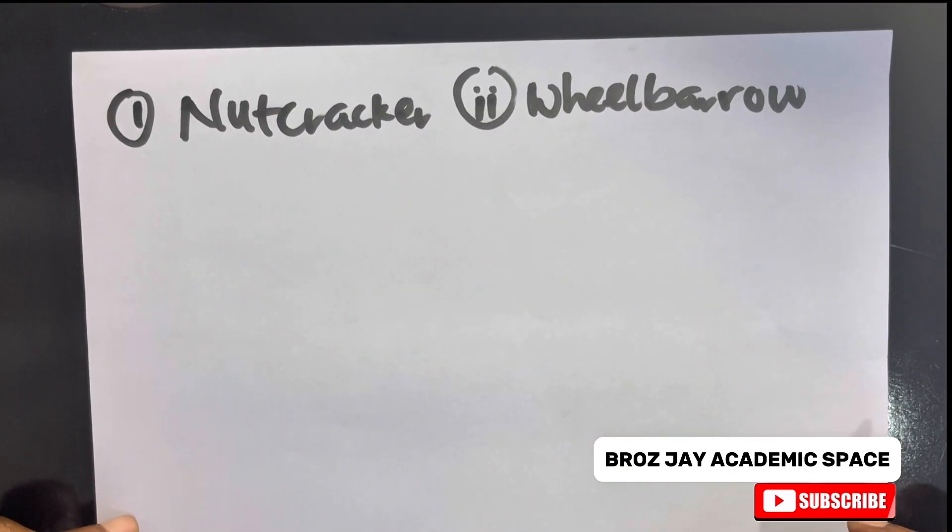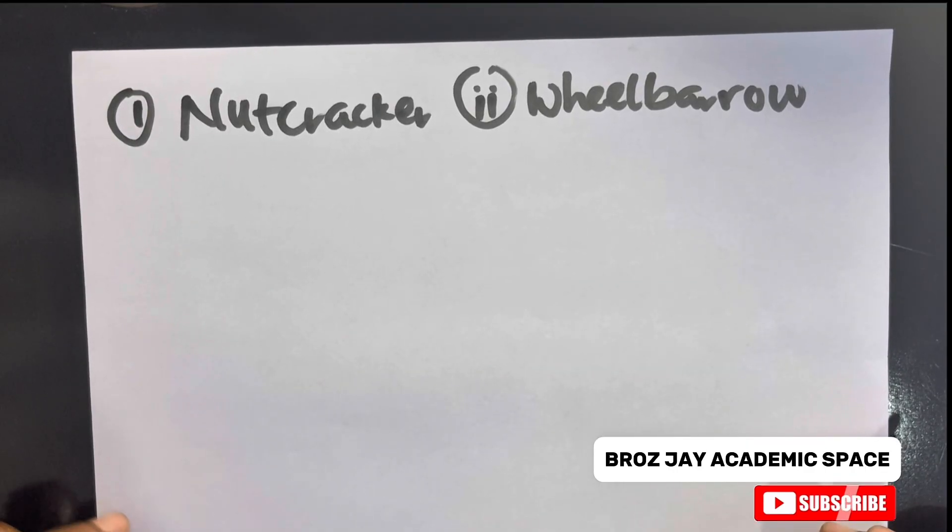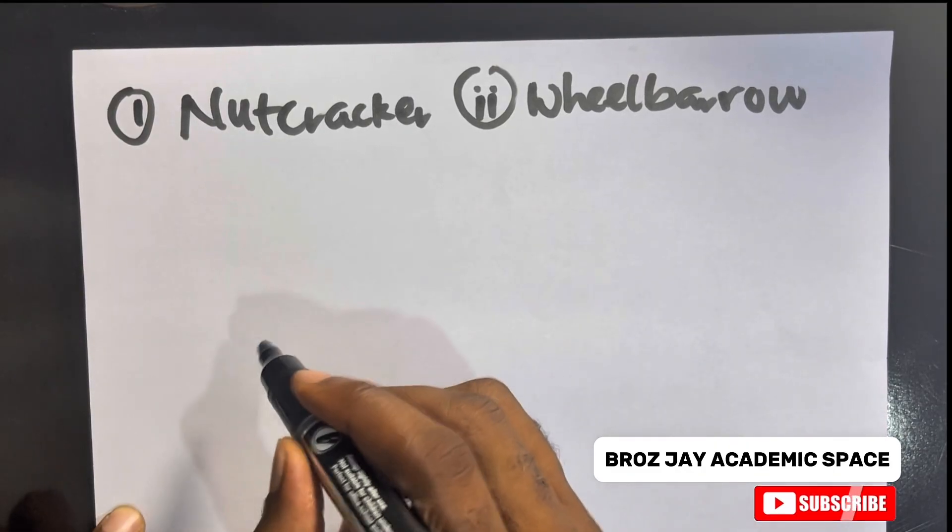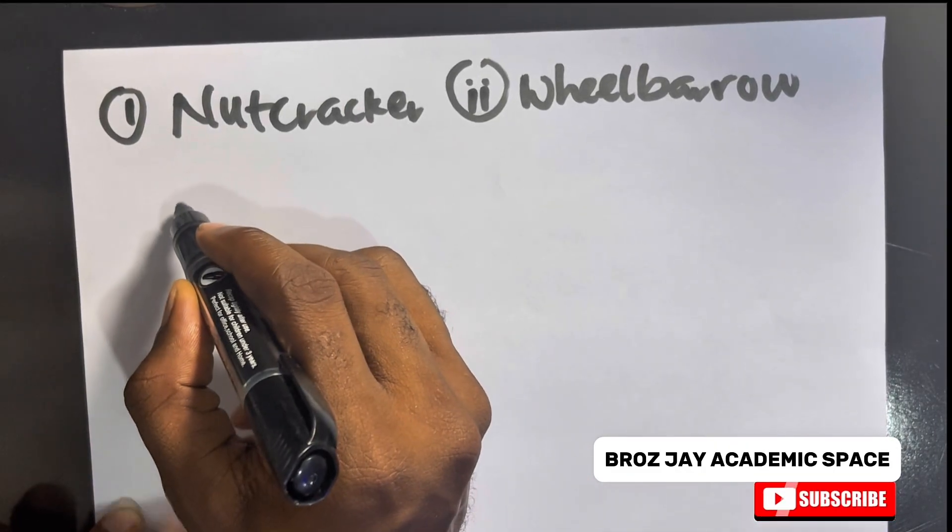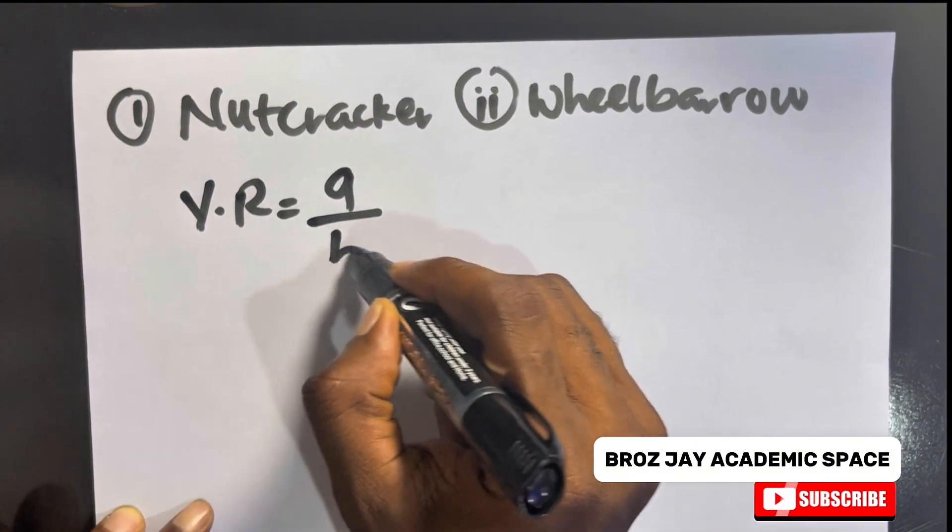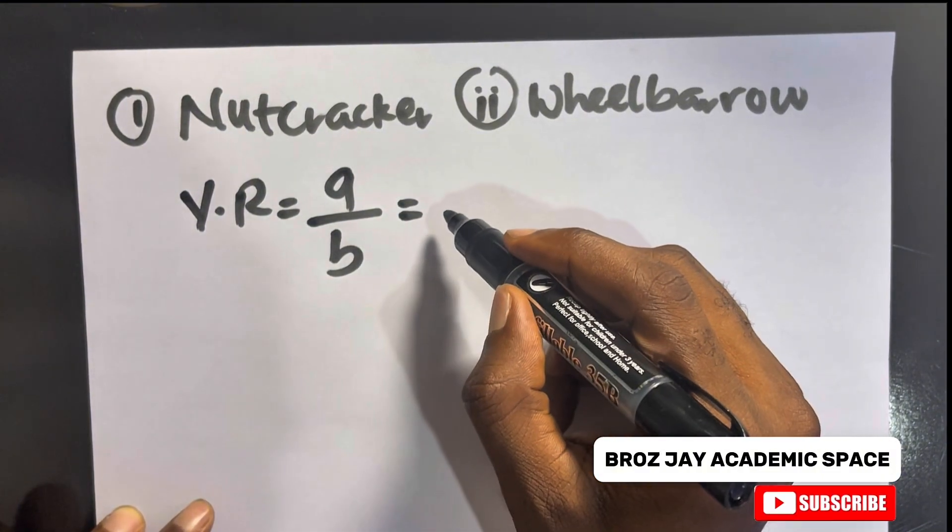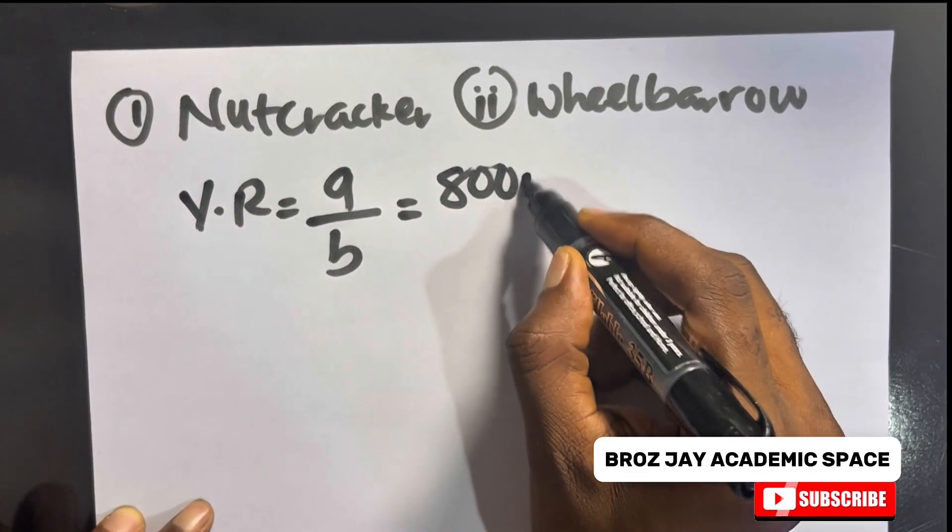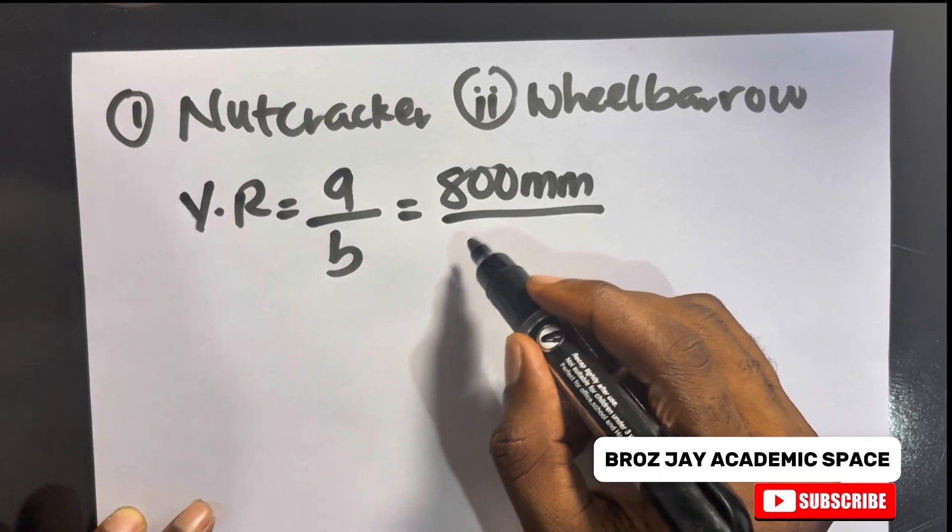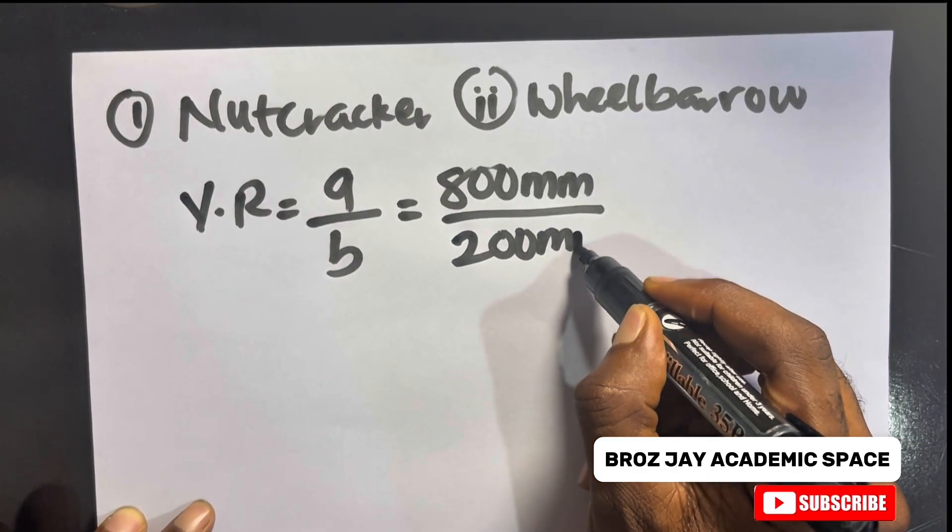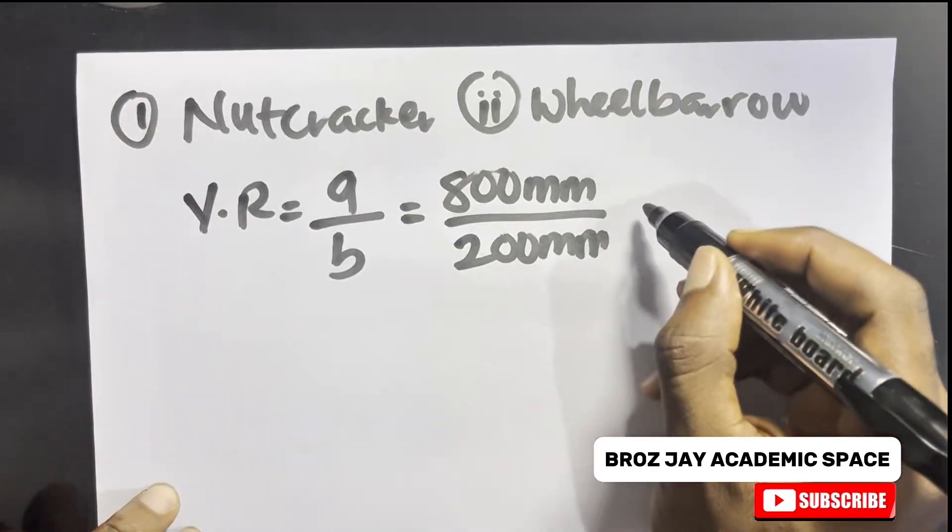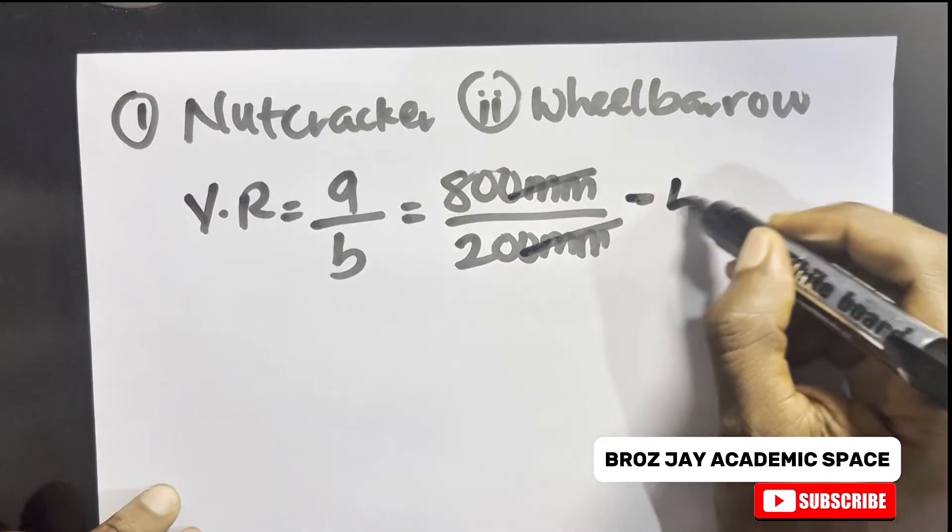Let's dive into the solution of that problem. We have wheel and axle. The velocity ratio for wheel and axle is a over b, and our a equals 800 millimeters, our b equals 200 millimeters respectively. They say we should find the efficiency of the machine. If I cancel this, I will have 4 as my velocity ratio.